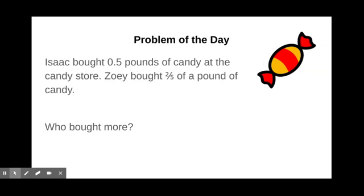Your problem of the day is, Isaac bought 5 tenths pounds of candy at the candy store. Zoe bought 2 fifths of a pound of candy. Who bought more? Figure this out on your own, pause the video to work the problem, do the best you can, think about what we've learned about decimals and fractions so far this year.